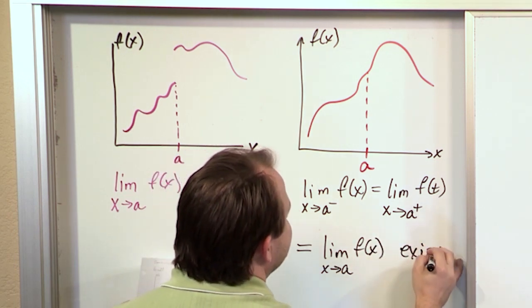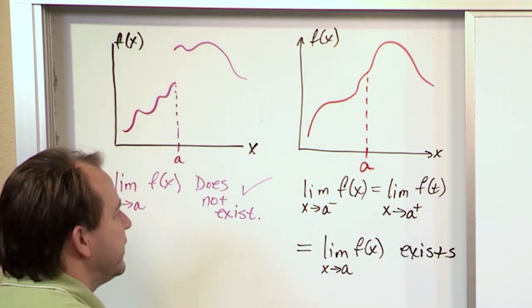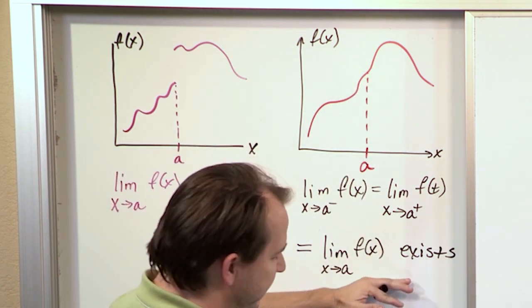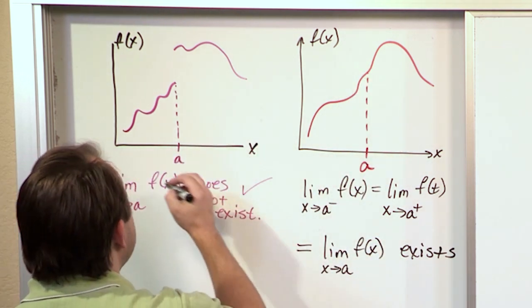Which is also equal to what we call now the two-sided limit of f of x. And we say that it exists, and its value is just whatever we calculate coming from the left, coming from the right. They're going to meet in the middle, and that is the value of what we call the two-sided limit.